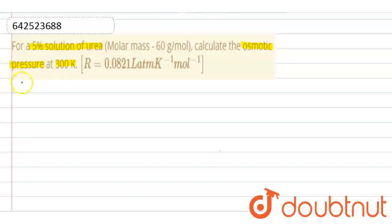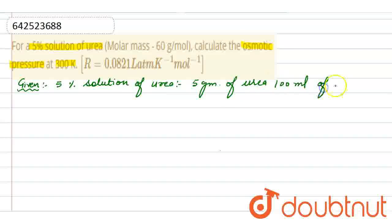So the given values are: What is given here is a 5% solution of urea. That means 5 grams of urea in 100 ml of solution.